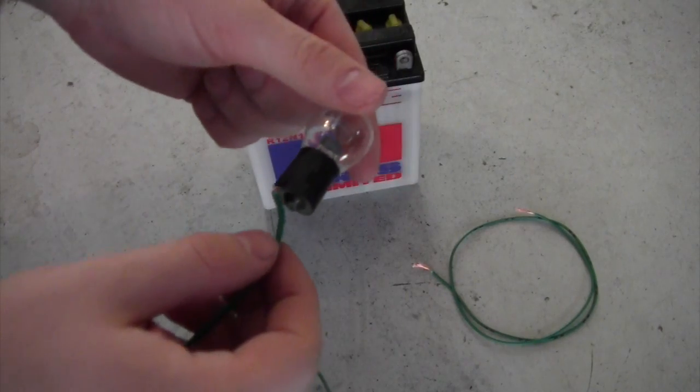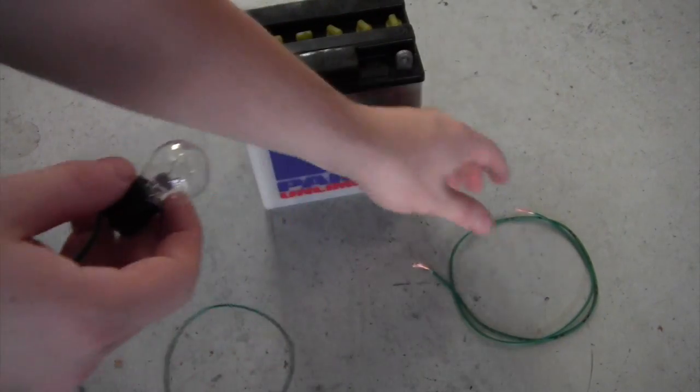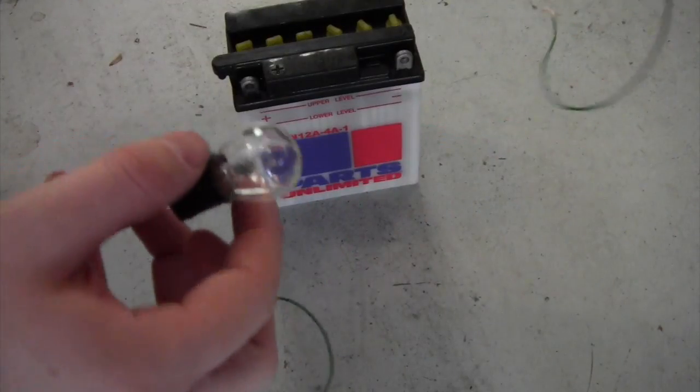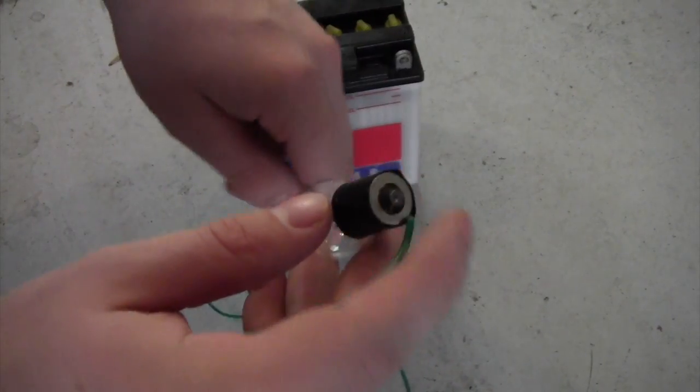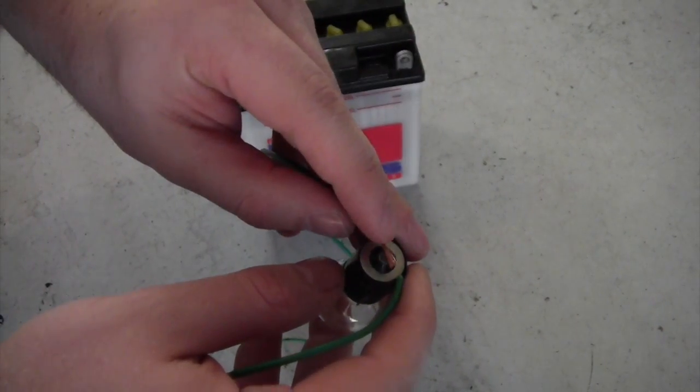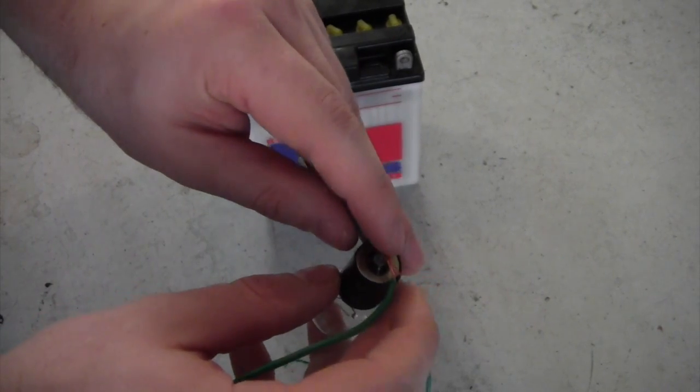So now the first wire is taped to the outside. Next tape the second wire to the bottom where you would screw in the light bulb.